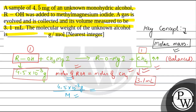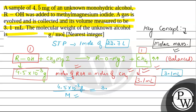At standard temperature and pressure, one mole of gas occupies 22.7 liters, which is 22,700 mL. So the moles of CH₄ = 3.1 mL divided by 22,700 mL. Setting this equal to the moles of ROH and rearranging the equation gives us the molar mass M.